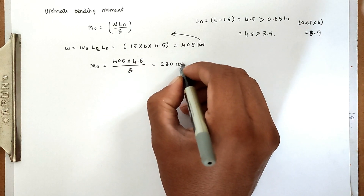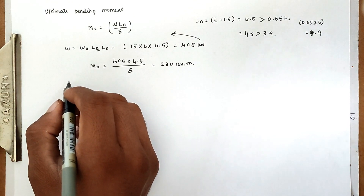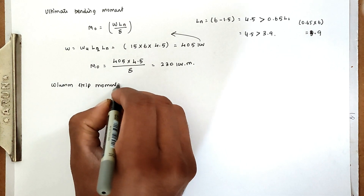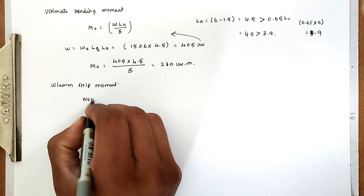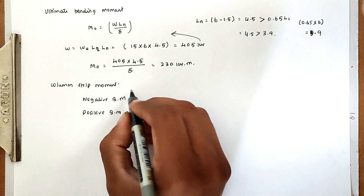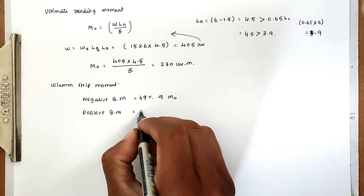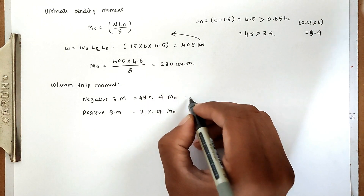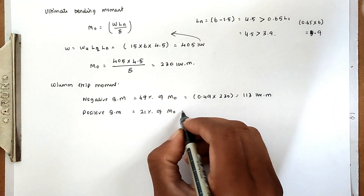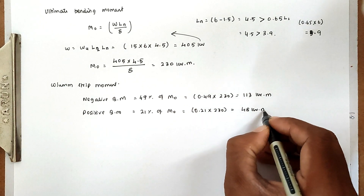Substituting into the formula: M0 equals 15 into 6 into 4.5 squared divided by 8 equals 230 kN·m. Now for column strips: negative bending moment is 49% of M0 equals 0.49 into 230 equals 113 kN·m. Positive bending moment is 21% of M0 equals 0.21 into 230 equals 48 kN·m.